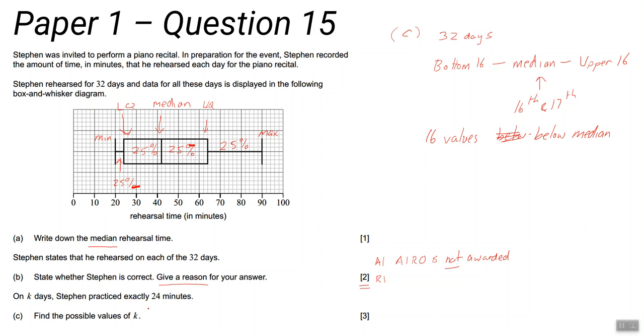24, I'll give you a clue now, is less than the median. So could all 16 of those values be 24? Well, you know what the minimum is. You certainly know what that is. And you know what the lower quartile is.